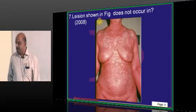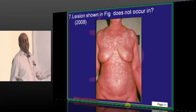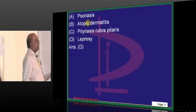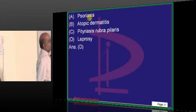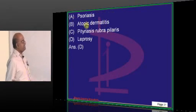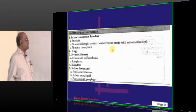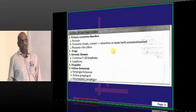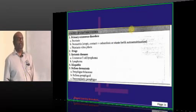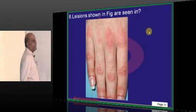There is a lesion shown here which is essentially erythroderma. What are all the conditions where erythroderma is seen? It is seen in psoriasis, atopic dermatitis, and Pityriasis rubra pilaris. There are a list of causes for the development of erythroderma — this is what you need to remember.